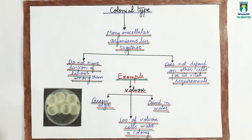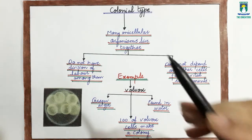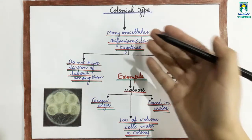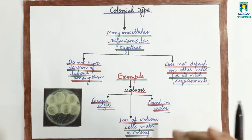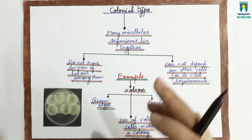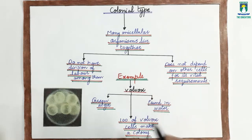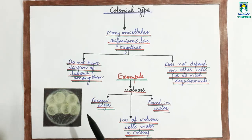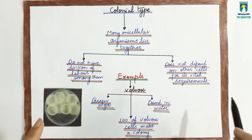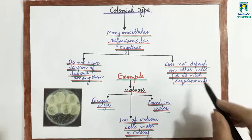As we have discussed at the organelle and cell levels, there is a division of labor. But here is the difference between colonies and that level: the cells in your body have organelles, but in colonies, unicellular organisms are individuals. They don't depend on other cells; they perform their own individual functions and don't depend on other cells for their vital requirements.